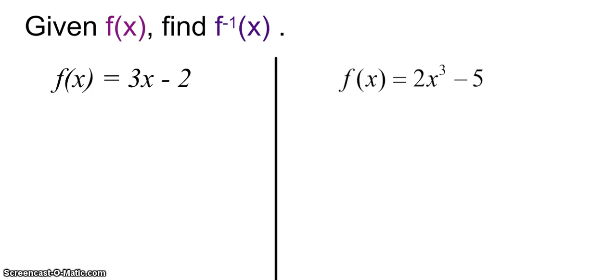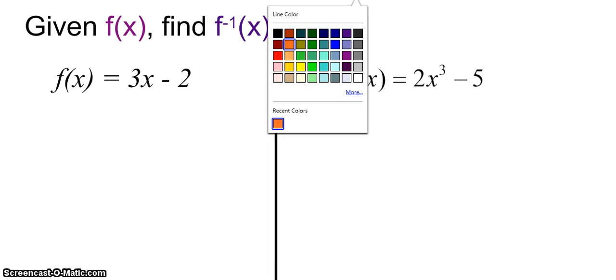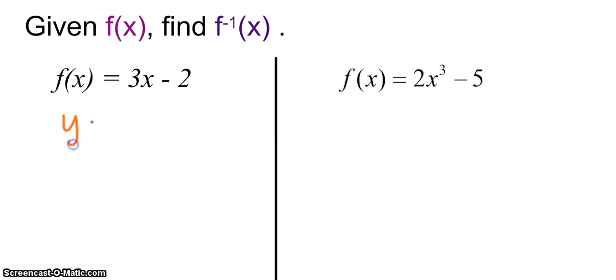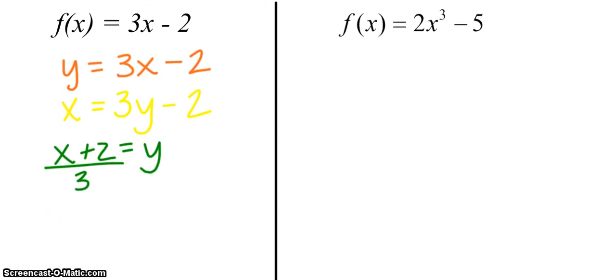Alright, so here are our two functions that we had. Given f(x), find f inverse. We already determined that it exists, so we are going to actually now find it. First thing said to replace f(x) with the letter y. Done. Next step says to switch all y's with x's and all x's with y's. Got that. Then it says to solve for y. Well, that means I'm going to add 2 and divide by 3.